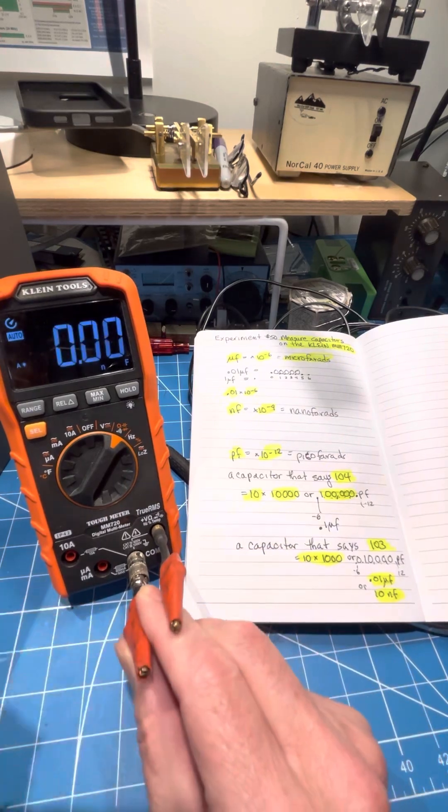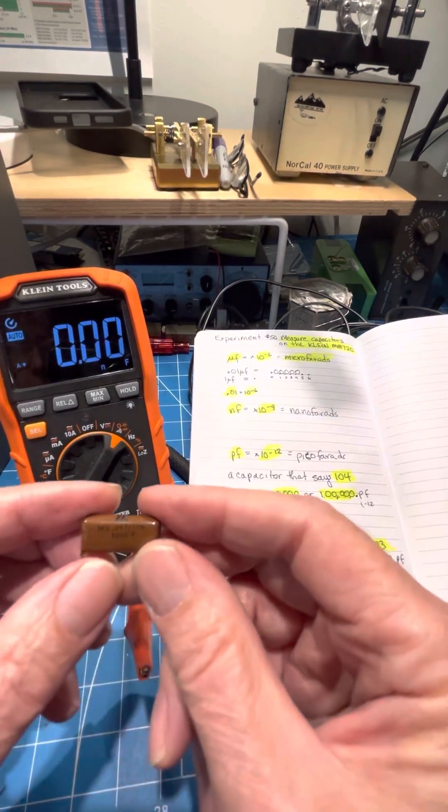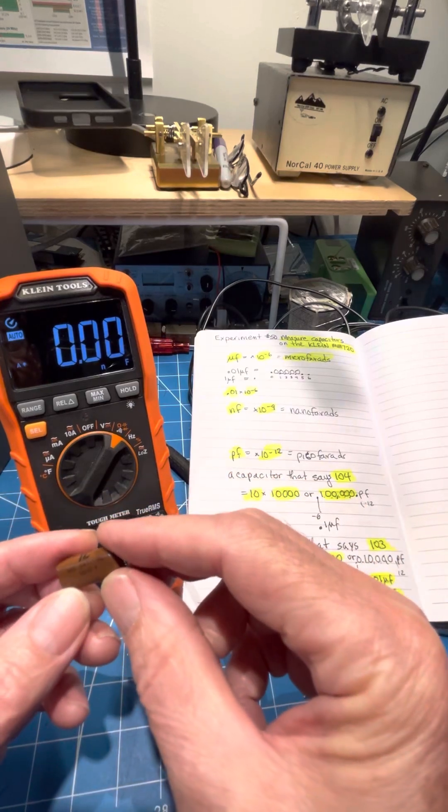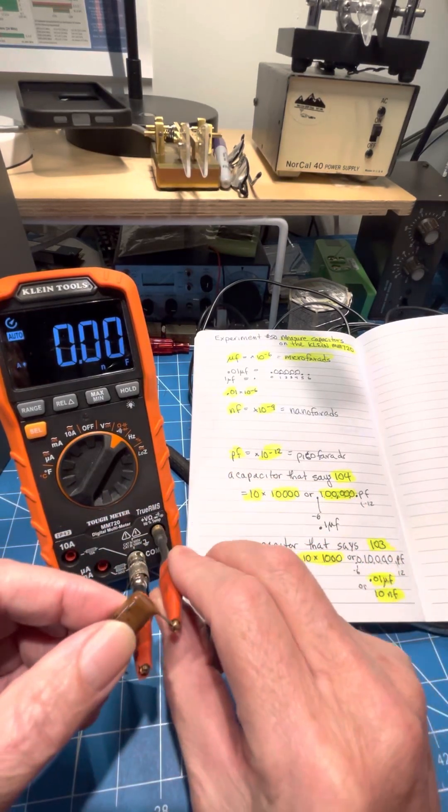We'll do one more. This one you can read. It says 0.047. That's microfarads.